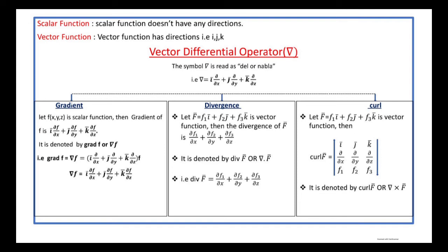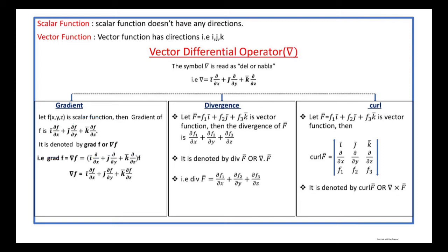The gradient of f is denoted by grad f or del f. That is: grad f = del f = i-bar (∂f/∂x) plus j-bar (∂f/∂y) plus k-bar (∂f/∂z).